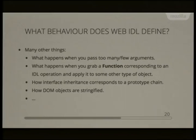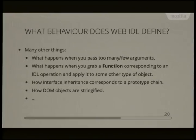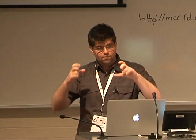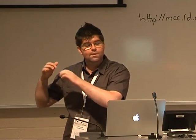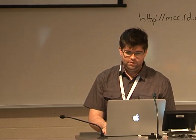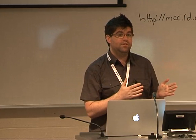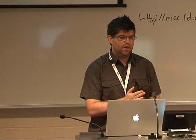Web IDL also defines what happens when you pass too many or too few arguments to a JavaScript function corresponding to an IDL operation, what happens if you apply a function to an unexpected object, how interface inheritance corresponds to the JavaScript prototype chain, how DOM objects get stringified (like [object Something]), and various other things — all filling the gaps that existed before Web IDL.